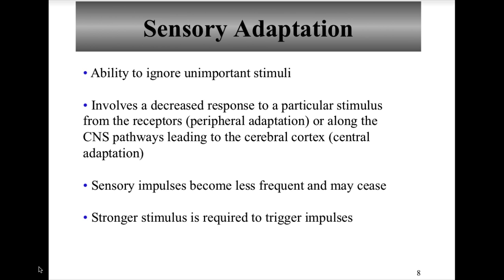Sensory adaptation is the process by which a sensory receptor becomes less stimulated following continuous stimuli. All sensory receptors except pain receptors adapt to continuous stimuli. This involves a decreased response to a particular stimulus from the receptors, and adaptation can occur peripherally or along the central nervous system's pathways to the cerebral cortex. Sensory impulses become less frequent and may cease, and a stronger stimulus is required to trigger the impulse.